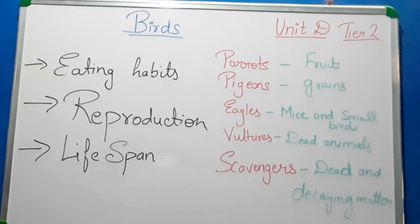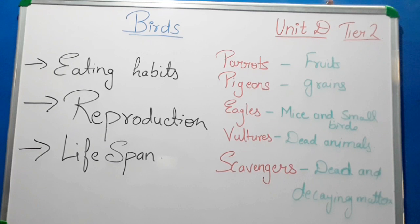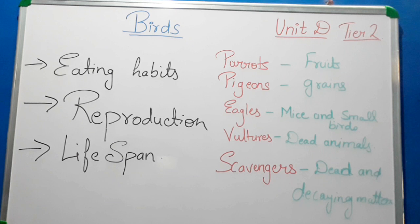Now let's see the lifespan of birds. Lifespan differs for different birds. As a general rule, larger birds tend to live longer. A small songbird's lifespan is 10 months. A Laysan albatross has survived 42 years and 5 months. Parrots kept as pets have the capacity to live over 80 years.